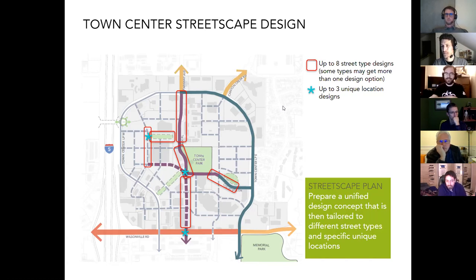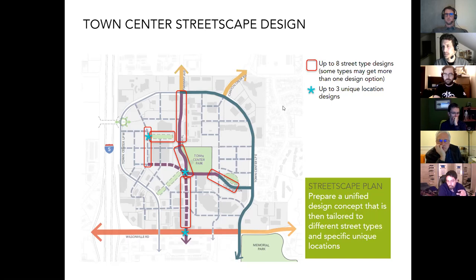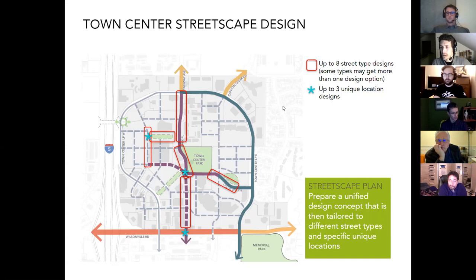Ben also noted that it rains nine months out of the year in Wilsonville, and asked whether there will be covered areas beyond the one behind the water fountain at Town Center Park. He observed that the Smart bus stop closer to Goodwill is well-used, but he rarely sees anyone use the covered one on Courtside across from City Hall — when it's raining, people sit with umbrellas. The presenter said they'd show weather protection features in the upcoming concepts and could talk more about those after the presentation.